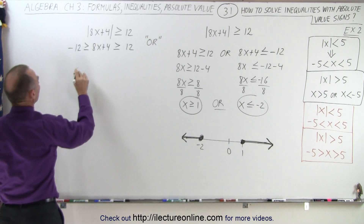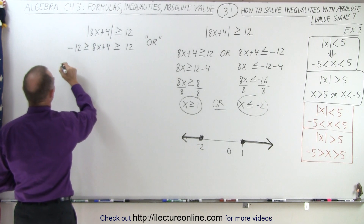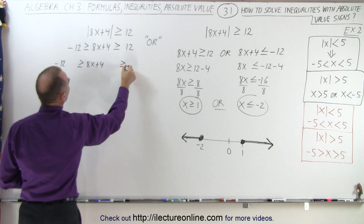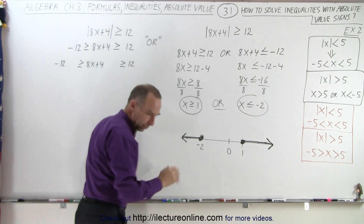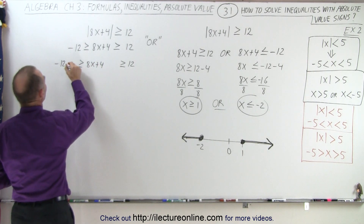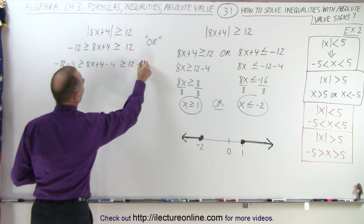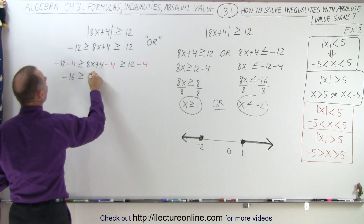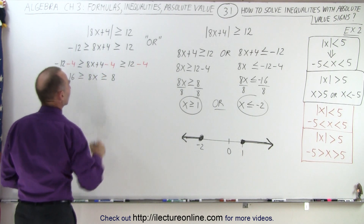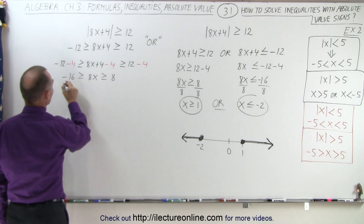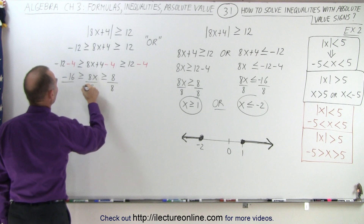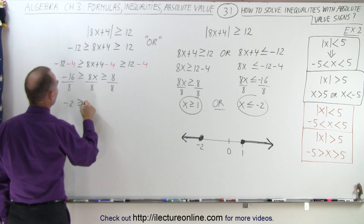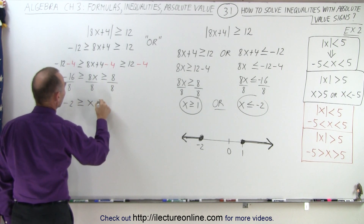First, we want to get rid of the 4, so we subtract 4 from all three portions. That gives us negative 12 minus 4, greater than or equal to 8x, greater than or equal to 12 minus 4. We subtract 4 from each part, which means we have negative 16, greater than or equal to 8x, greater than or equal to 8. Now we divide everything by 8. Since it's a positive 8, we do not have to change the direction of the inequality signs — we don't have to flip them. So we end up with negative 2, greater than or equal to x, which is greater than or equal to 1.